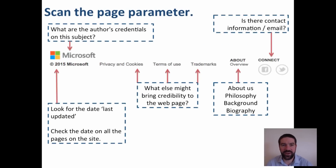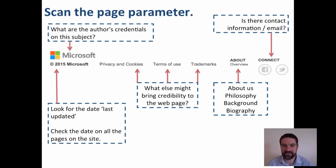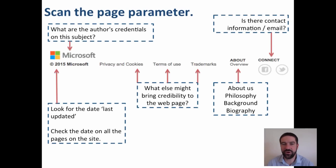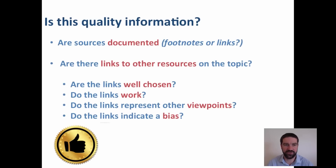We could also look around the page for other clues. This appears at the bottom of Microsoft's website — what are the author's credentials on the subject? What was the date it was last updated? What about the dates on other pages of the site? What else might bring the page credibility — like privacy and cookies, terms of use, or trademarks? What about the actual person who published the work — their philosophy, background, biography? And is there a way to contact the owner of the site if you need to ask more questions? All of these are digital clues we need to highlight to our students.